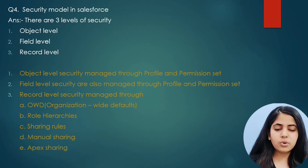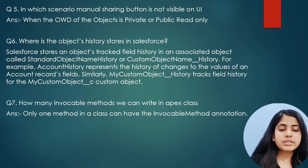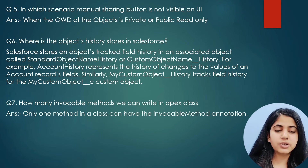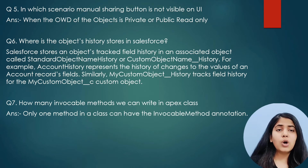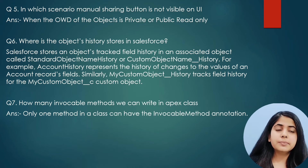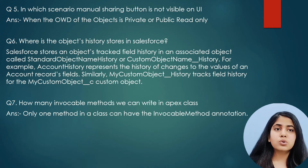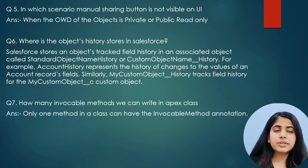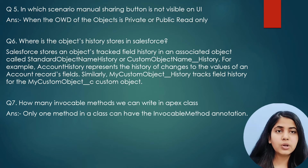The next question was: in which scenario is the manual sharing button not visible on the UI? If the object's OWD is set to Private or Public Read Only, then the manual sharing button will be visible. If it is set to Public Read/Write, the manual sharing button will not be visible. So the manual sharing button is visible only when OWD is Private or Public Read Only.